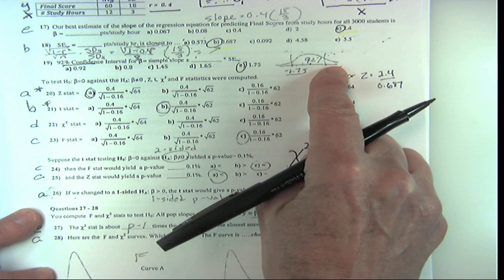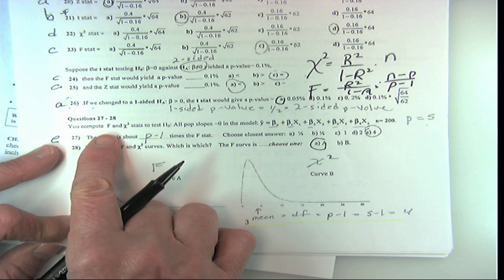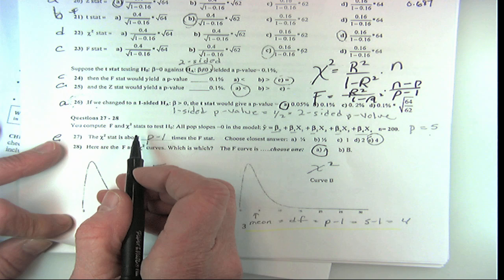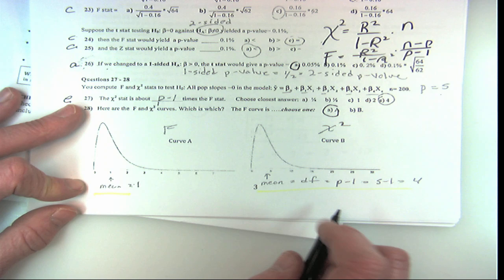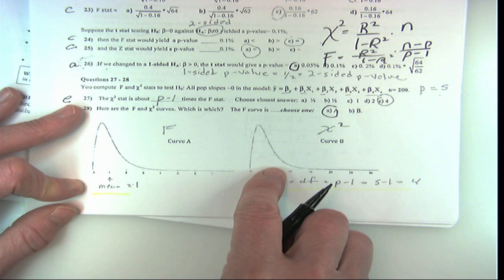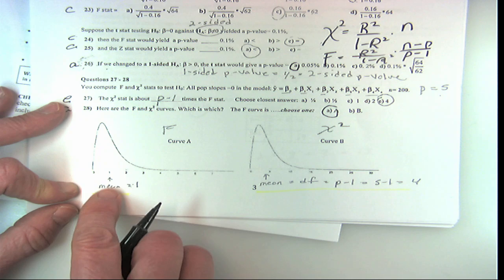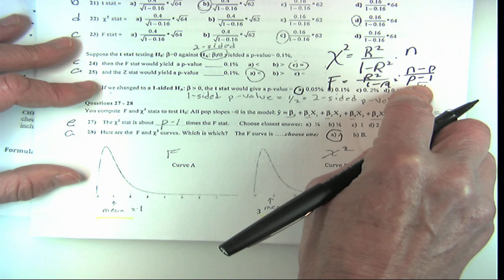Now with five parameters, remember that the mean of the chi-square is going to be about 5—that's its degrees of freedom. The mean of the F is always 1, because we've divided through by p minus 1 to make it that way.